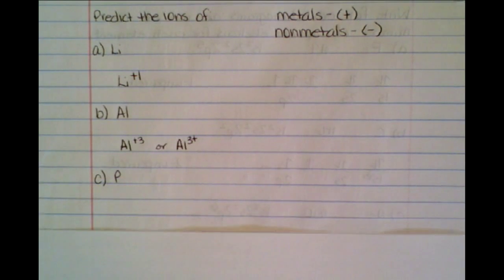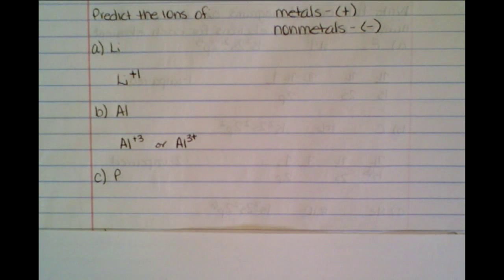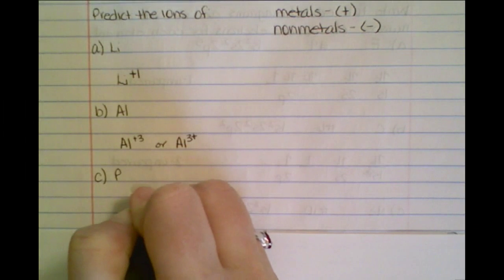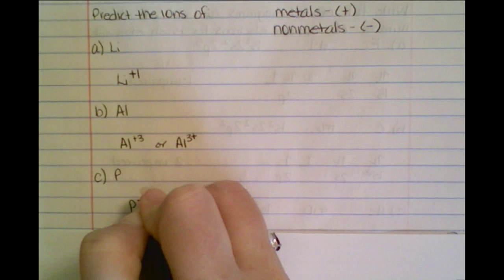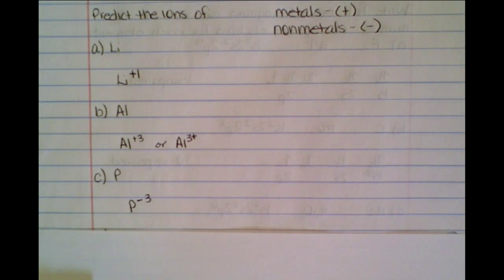So let's look at P. If I look at P, I know it's a non-metal. So I already know it's going to have to have a negative charge. And now I just need to know how far to the right do I have to count. Well, I have to count three places to get to the nearest noble gas.